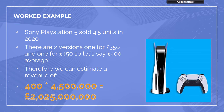As a worked example using real figures: the Sony PlayStation 5 sold 4.5 million units in 2020. There are two versions of the console — one costs £350 and the other costs £450. Using £400 as the average price, we can estimate revenue by multiplying £400 by 4.5 million units, giving Sony PlayStation 5 an estimated revenue of £2.25 billion for the whole year.